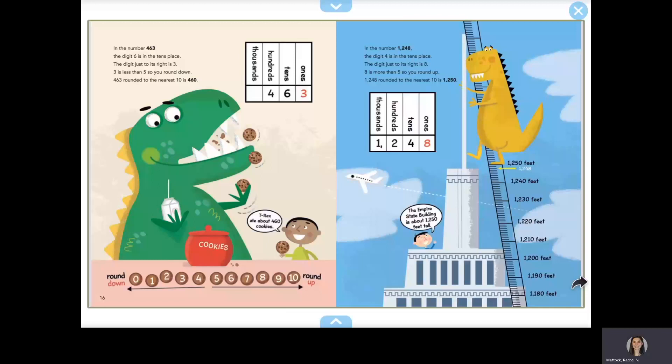In the number 463, the digit 6 is in the tens place. The digit just to the right is 3. 3 is less than 5, so you would round down. 463, rounded to the nearest 10, is 460.